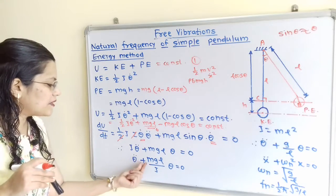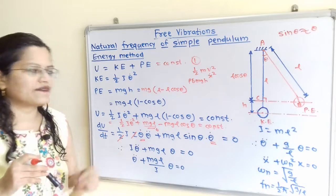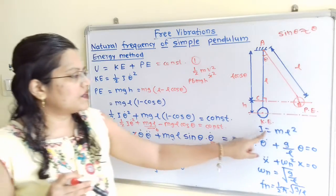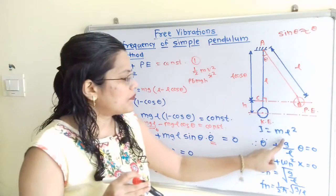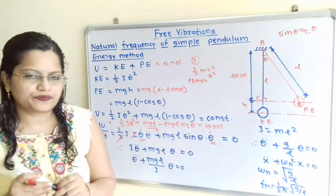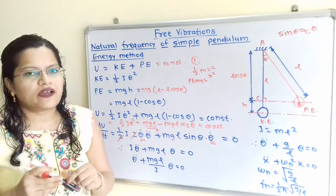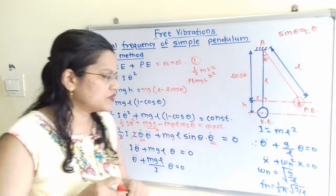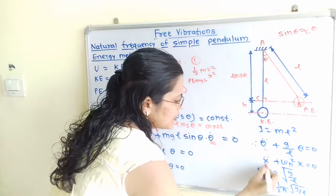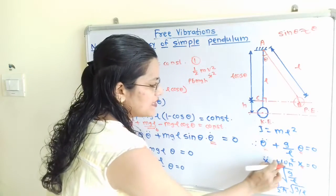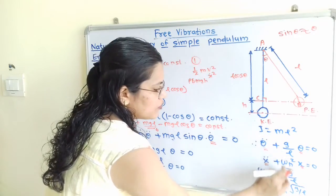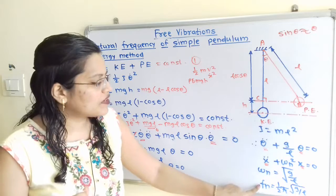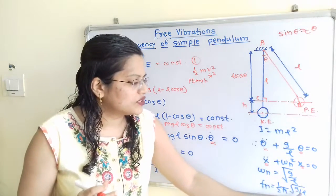Simplifying further: theta-double-dot plus (MgL / I) theta equals zero. Substituting the mass moment of inertia I equals M times L squared: theta-double-dot plus (g / L) theta equals zero. Comparing with the standard equation of free longitudinal vibration, x-double-dot plus omega-n squared times x equals zero, we get omega-n equals the square root of g by L, and therefore fn equals (1 / 2pi) times the square root of g divided by L.